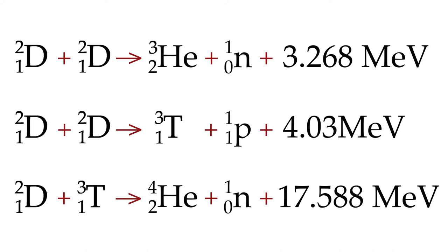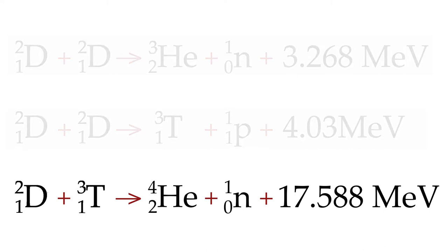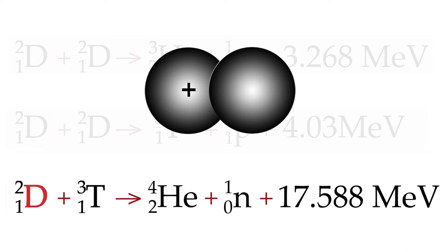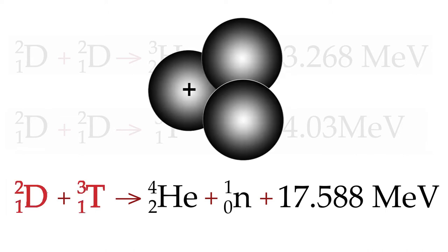It turns out that the easiest one to do, and the most productive of energy, and therefore, of a fusion weapon, is to take one deuterium and join it to a tritium, so that you have a D sub 1 super 2 plus a T for tritium sub 1 super 3.